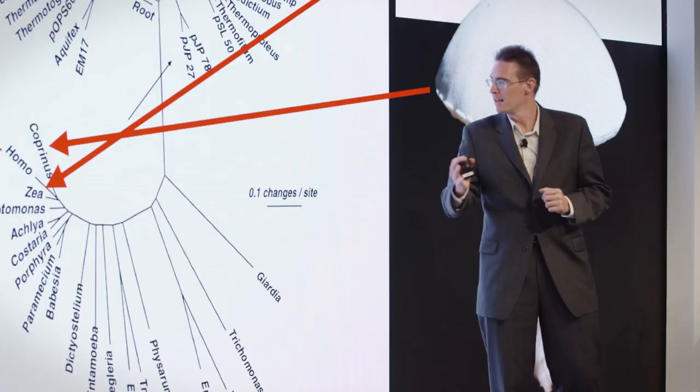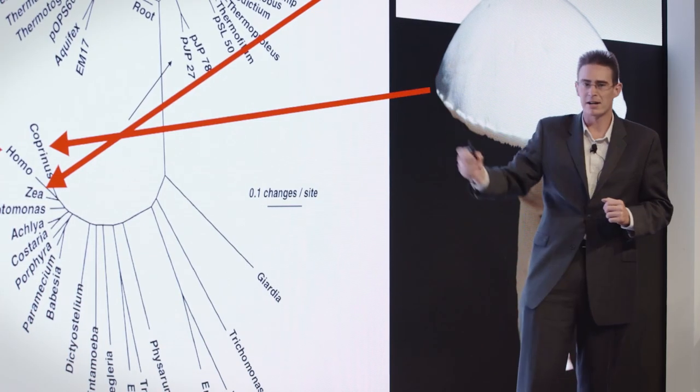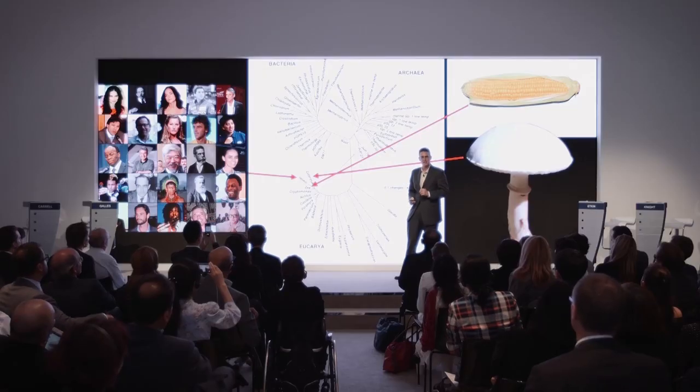This is a mushroom, for example. So all of the plants and animals and fungi that we see around us are just this tiny twig of the tree, and all of the rest of life is microbial, including the microbes that inhabit our bodies.